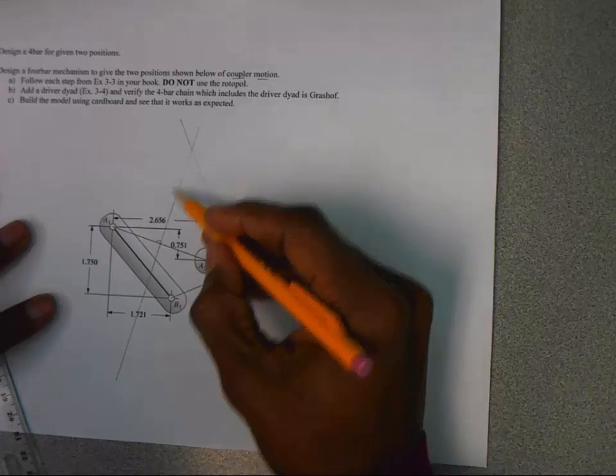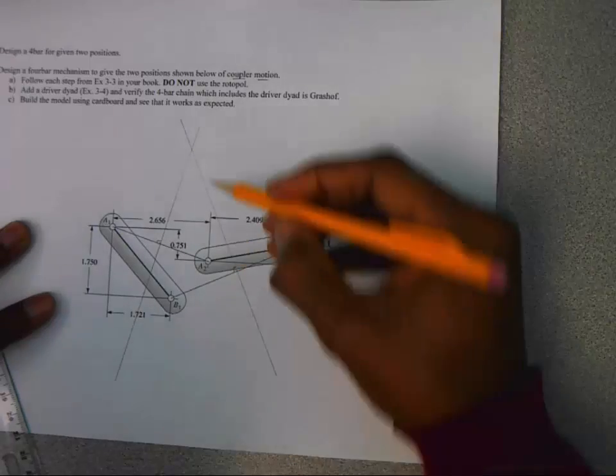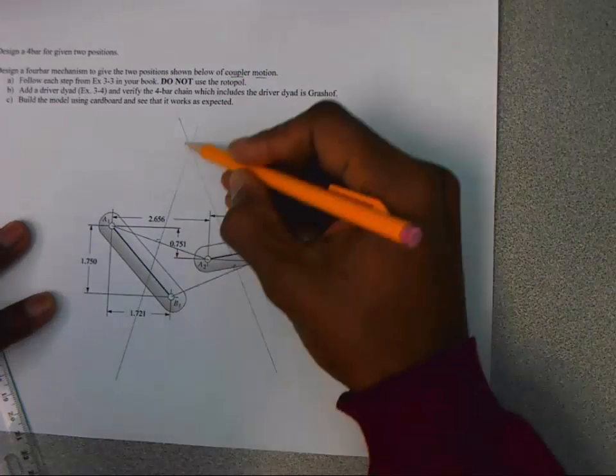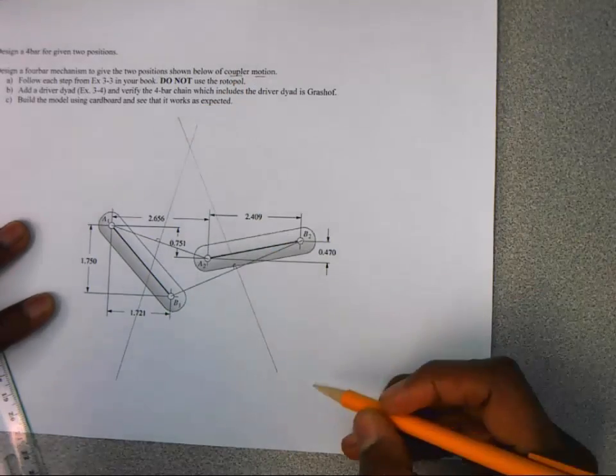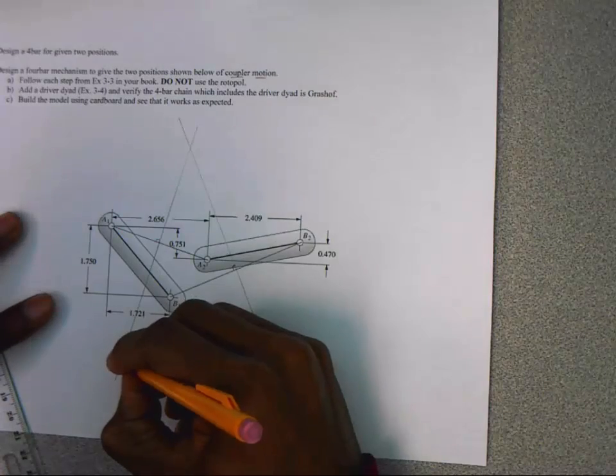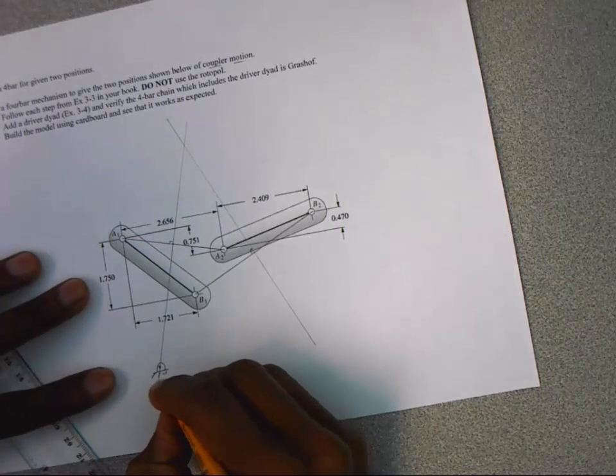Now, ground link O2 is going to be somewhere on this line. And ground position O2 is going to be somewhere on this line. And ground position O4 is going to be somewhere on this line. So I'm just going to pick a convenient spot. It doesn't really matter where it is on this line. I'll go ahead and pick this location and call that O2.